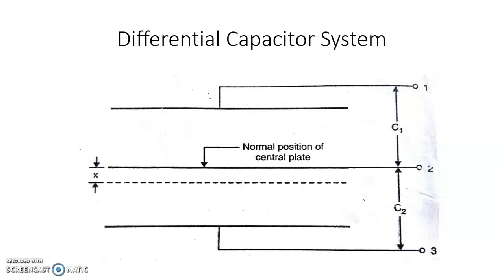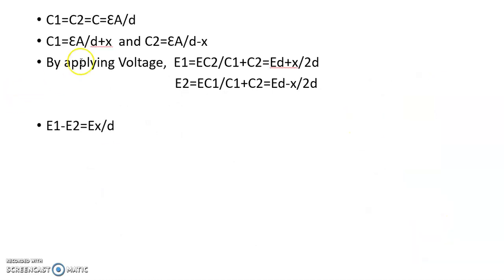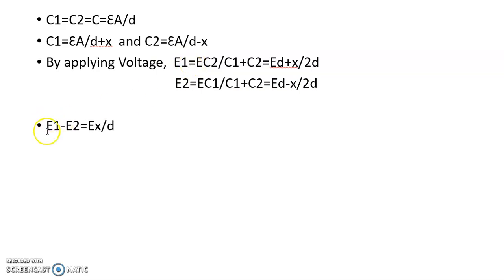Now suppose an alternating voltage is applied between terminals 1 and 3. The voltages across C1 and C2 will be: e1 equals E multiplied by C2 divided by (C1 plus C2). Substituting C1 and C2, we get e1 equals E multiplied by (d plus x) divided by 2d. Similarly, e2 equals E multiplied by (d minus x) divided by 2d. Taking the difference, e1 minus e2 equals E multiplied by x divided by d.